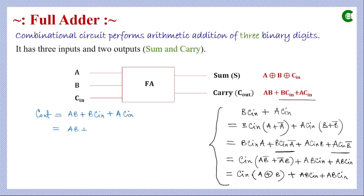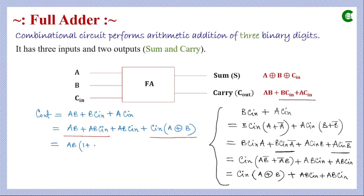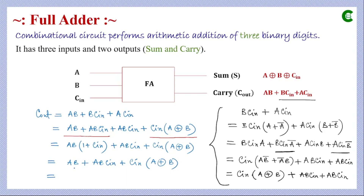The term A·B remains as the first term, and B·C_in plus A·C_in is replaced by its equivalent form. Combining these terms using Boolean algebra gives A·B·(1 + C_in), which simplifies to A·B. After applying Boolean algebra to the first two terms again, we retain A·B only. The final expression for C_out is A·B + C_in·(A XOR B), which is implemented as an AND of (A XOR B) with C_in, plus A·B.